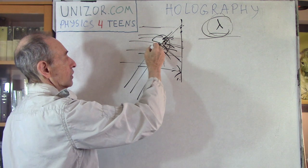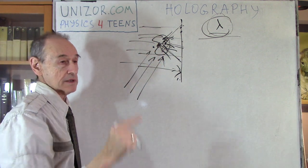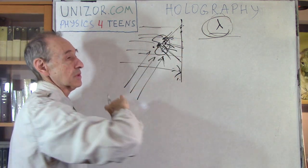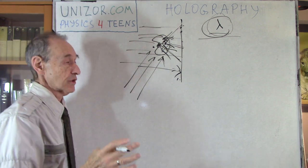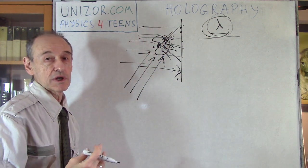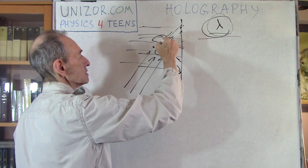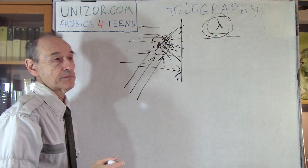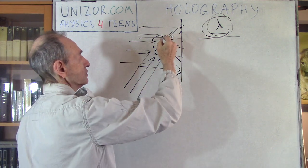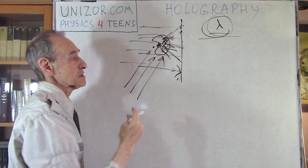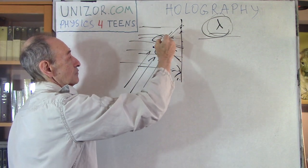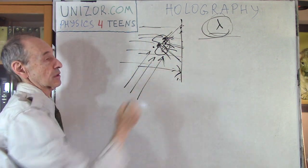If it were just one point light, as in the previous lecture, the interference picture would be circles. In this case the interference picture would be very complex. However, it will encode the geometry of this object — how each point emitted its light. This screen will contain a picture of each particular point source as some kind of interference pattern between the light reflected from that point and the parallel reference beam.